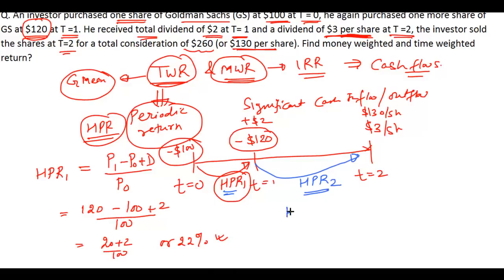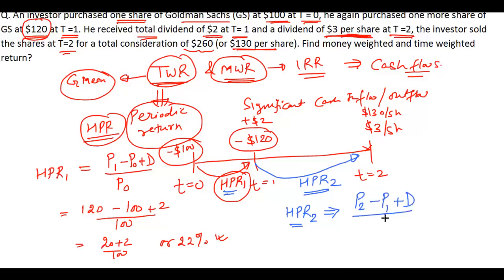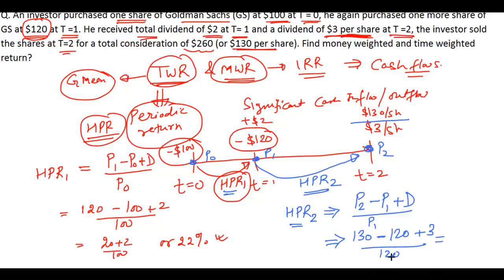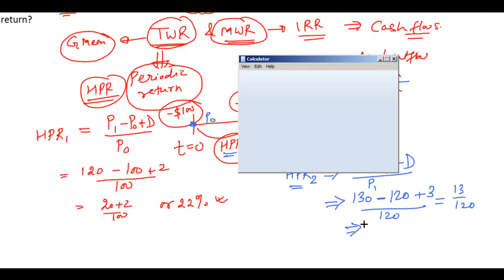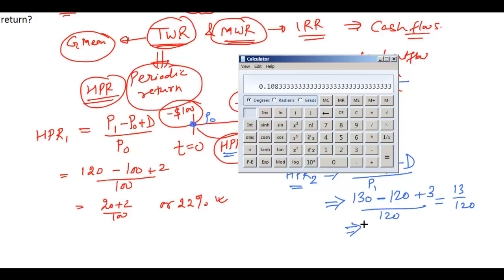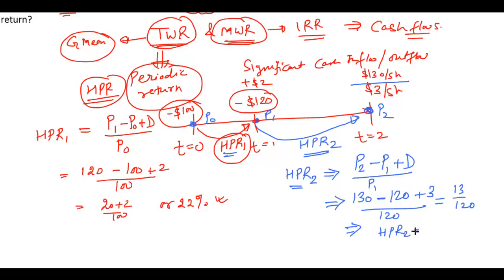To compute holding period return 2, we use the formula (P2 - P1 + Dividend) / P1. P2 is $130 per share and P1 is $120. The dividend at t=2 is $3 per share. So the calculation is (130 - 120 + 3) / 120 = 13 / 120. Computing this on a calculator gives 10.83%. So holding period return 2 is 10.83%.